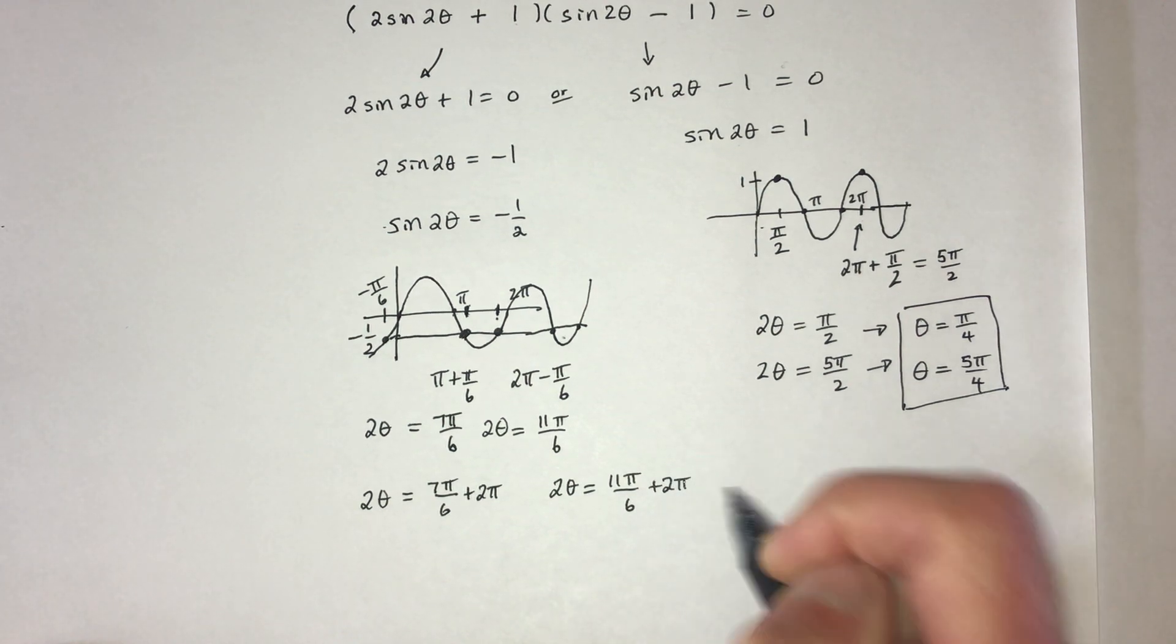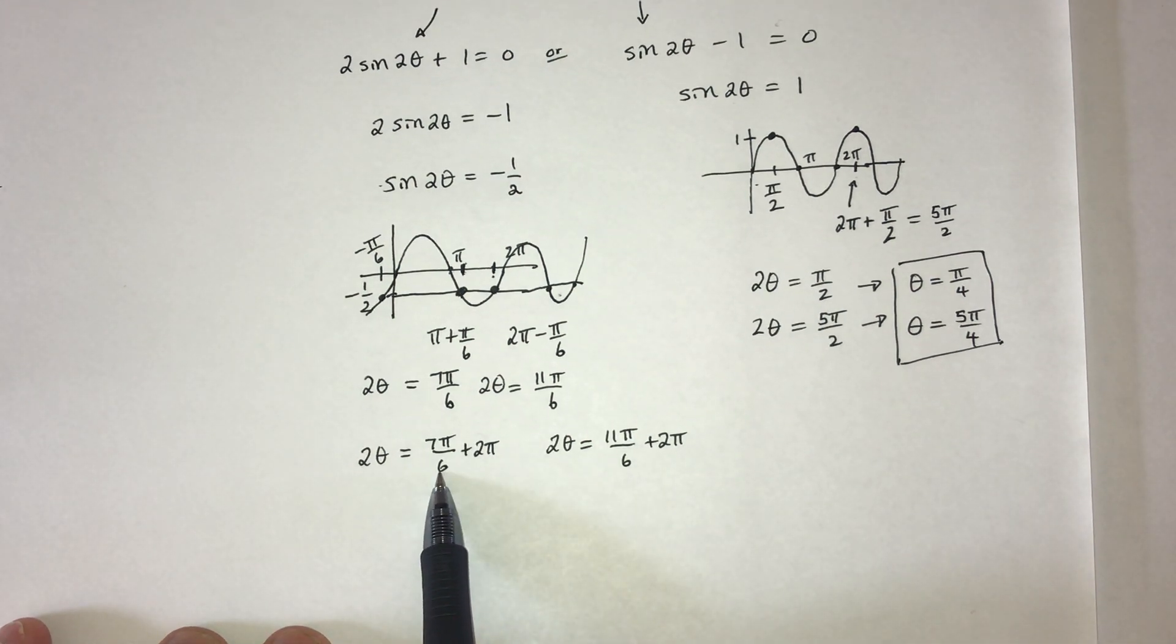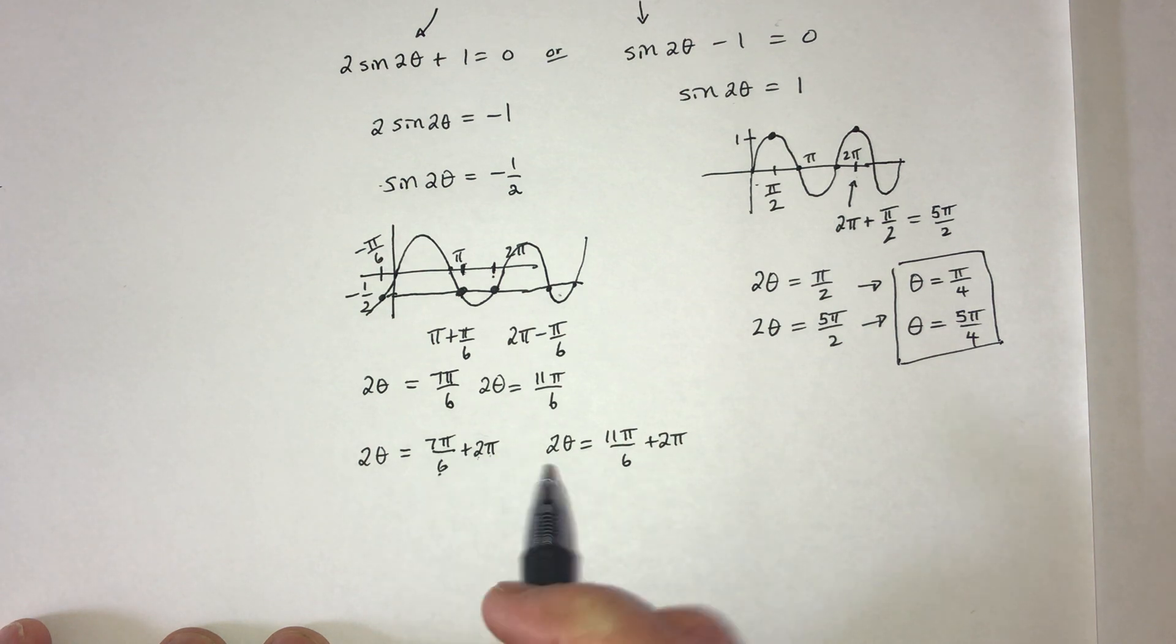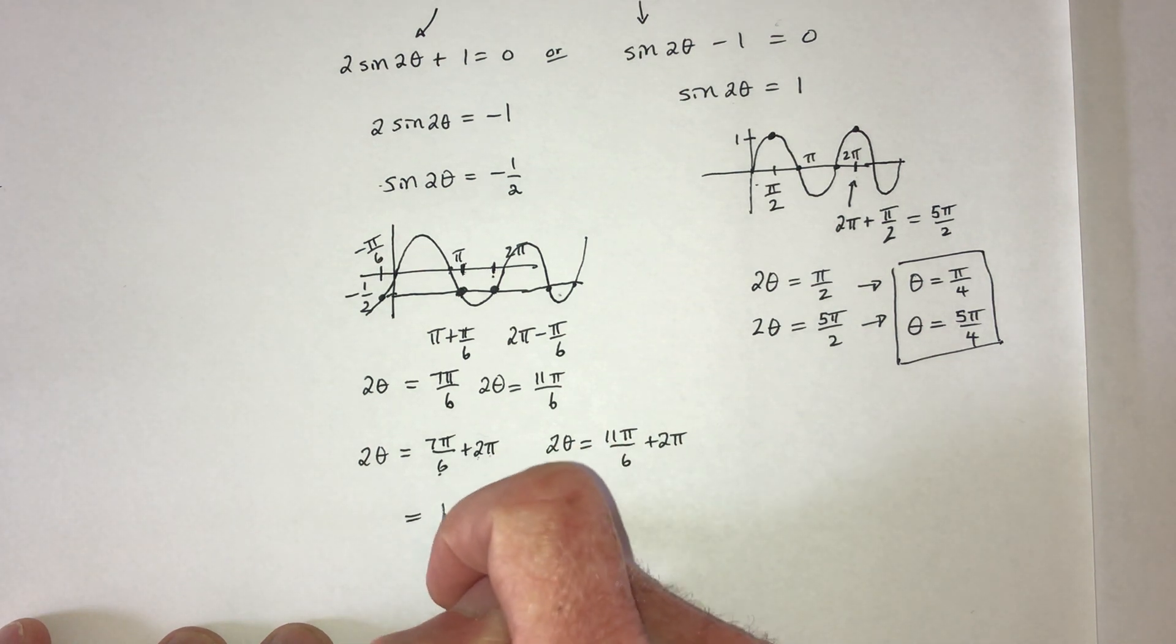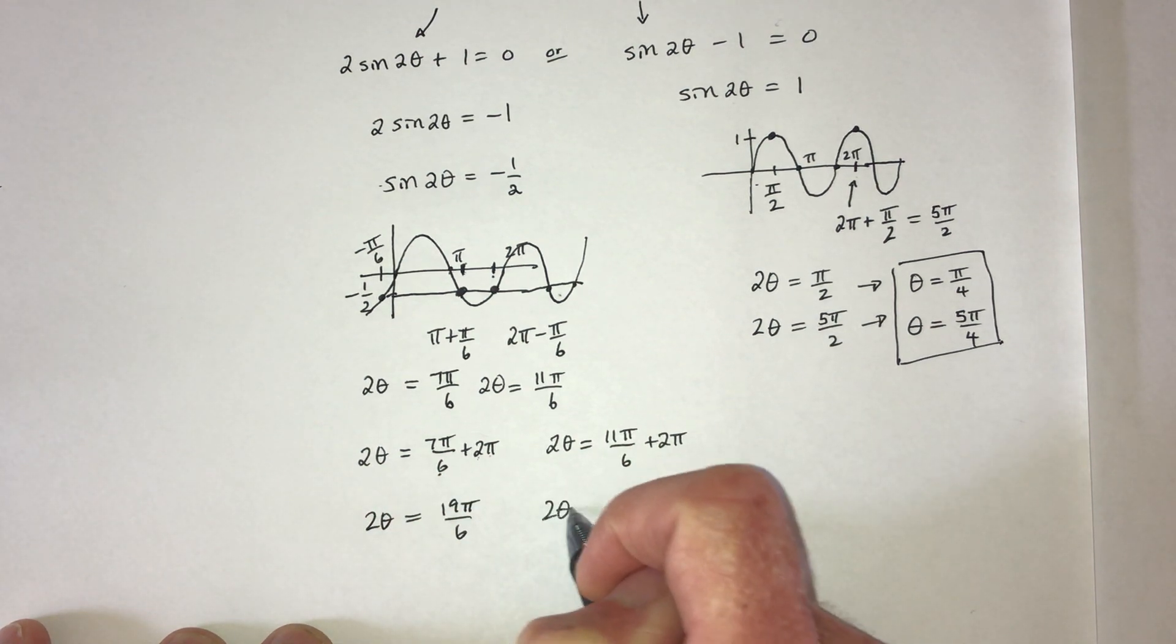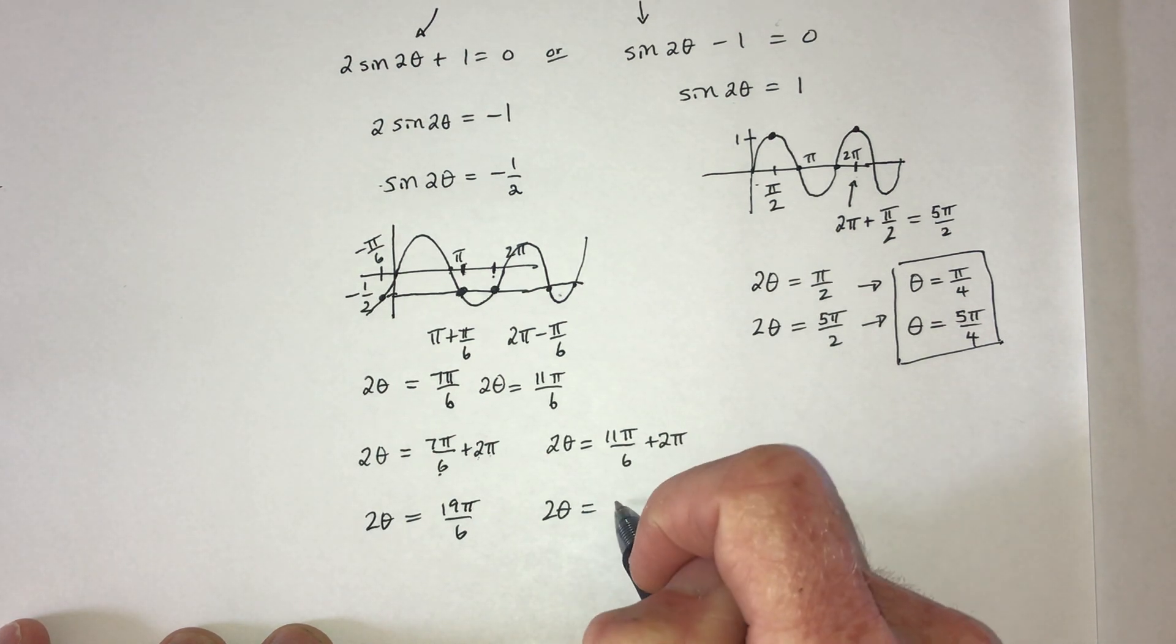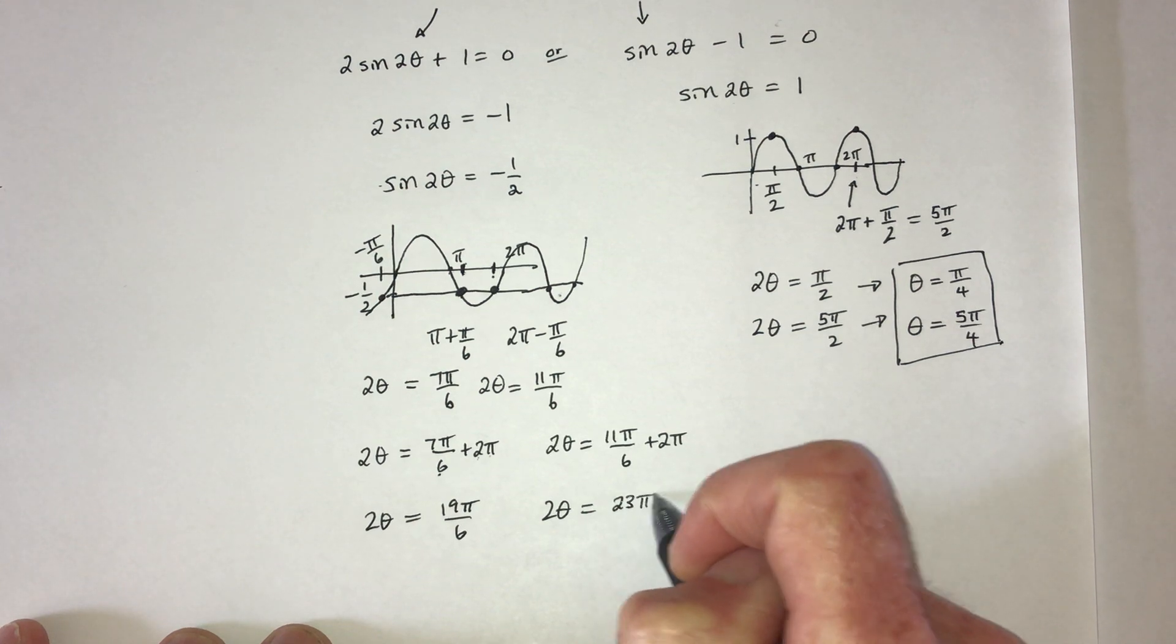So if you get a common denominator, this, you have to multiply by 6. So that's 12 pi over 6 plus 7. 12 plus 7 is 19 pi over 6. And for this one, that would be 12 pi over 6 plus 11 is 23 pi over 6.